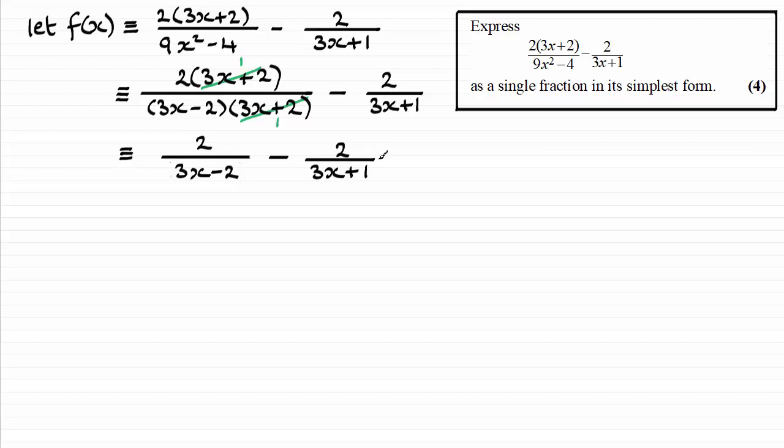Now I need to put these two fractions over the same denominator. And that's going to be 3x minus 2 times 3x plus 1.